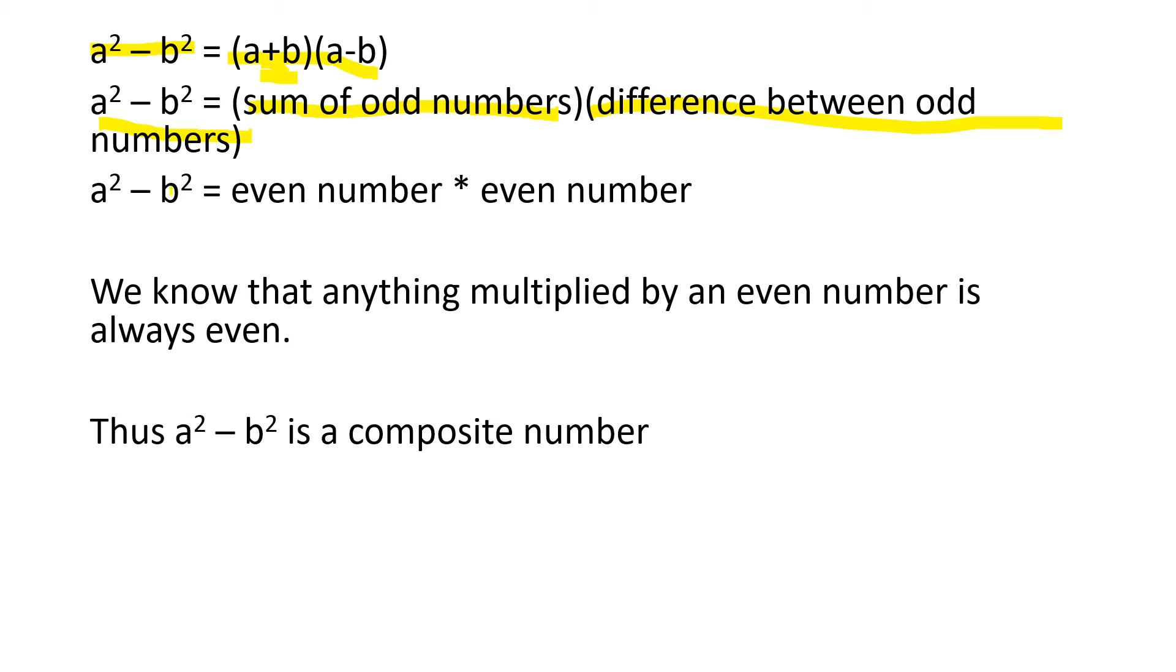A squared minus B squared is essentially an even number multiplied by another even number. We know that anything multiplied by an even number is always even, and here in the question the numbers were both greater than 3.